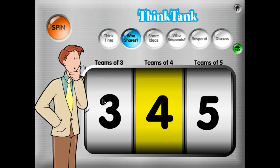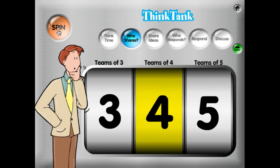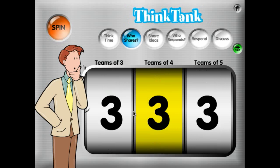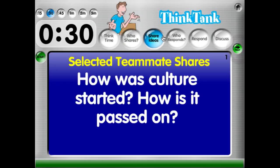We have a student selector here. If students are seated in teams of three, they look at the three-player section; teams of four look at the yellow section; teams of five look at the five-player section. We're going to go ahead and spin it — and student number three is selected, so student number three is going to share his or her ideas.